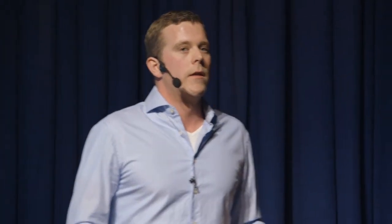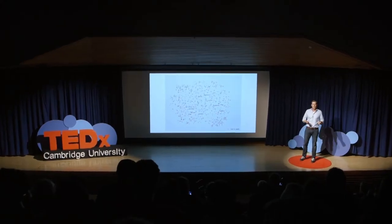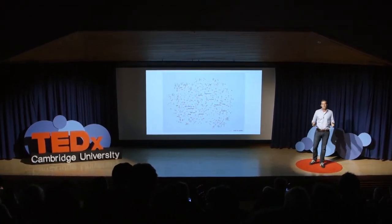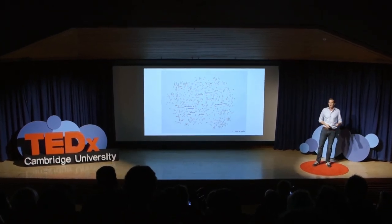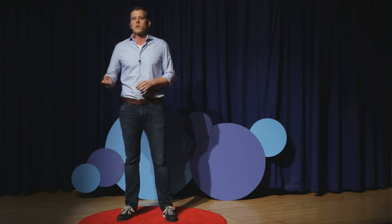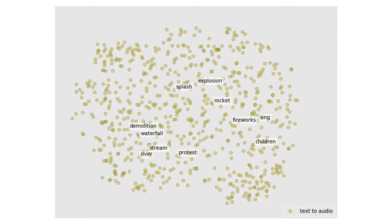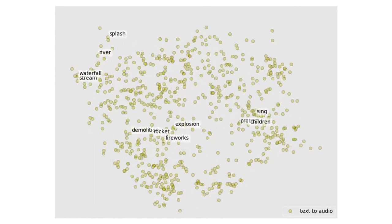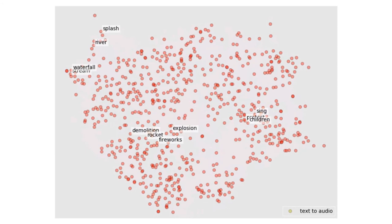So far I've talked about vision and text, but it's not restricted to that. We can do the same thing with audio — thinking about what things sound like. If I have a rocket and an explosion, demolition and fireworks, these should all be very close because they sound like explosions. The same goes for sounds produced by water — splash, river, and waterfall — and for sounds produced by humans, like protest, singing, or the sound of children. We can make the transition from text to audio space and see the water sounds, explosion sounds, and people sounds each coming together. That's a much better way of thinking about the meaning of those concepts from an auditory perspective.